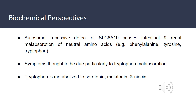Moving on to our biochemical perspective: Hartnup disease is an autosomal recessive defect of the SLC6A19 gene, which encodes for specific neutral amino acid transporters. This defect causes intestinal and renal malabsorption of neutral amino acids such as phenylalanine, tyrosine, and tryptophan. Hartnup symptoms are mainly due to tryptophan malabsorption. Tryptophan is metabolized to form serotonin, melatonin, and niacin — the importance of these metabolites will be discussed later.